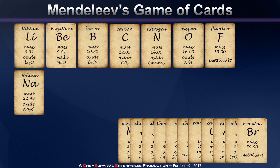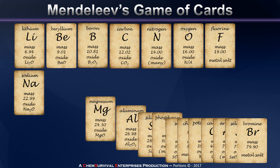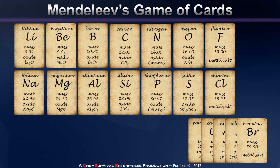Now we can continue lining up our elements with magnesium, aluminum, silicon, phosphorus, sulfur, and chlorine. And notice that the trend continues: lithium and sodium are similar, beryllium and magnesium are similar, as are boron and aluminum, carbon and silicon, and so on. In each case, when I place that second row underneath, I find that I have some order within the columns that I've created.